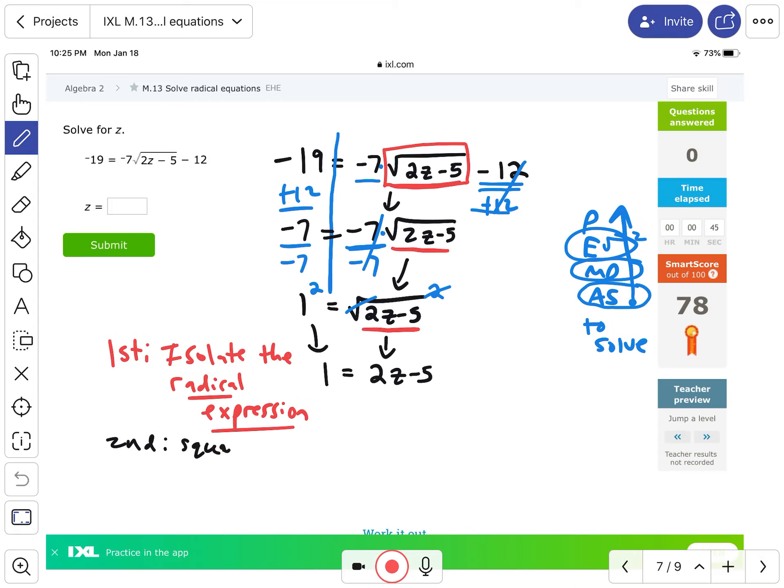So once you isolate it, the second thing you're going to do is square both sides, and then you're going to proceed to solve. So we're kind of starting at PEMDAS again here. We have minus 5 and then 2 times z, so we're going to start again at the adding and subtracting. I'm going to add 5 to both sides.